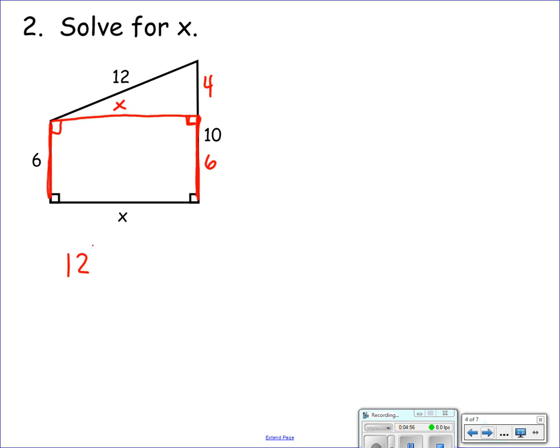So 12 squared is equal to X squared plus 4 squared. 12 squared, 144, is equal to X squared plus 16. Subtracting 16 from both sides, I get 128. Now I need to square root both sides. Again, we're talking about length, so we don't worry about the plus and minus. The square root of 128 simplified is 8√2.